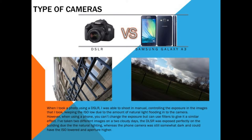The types of cameras I have used are DSLR and the Samsung Galaxy A3. When I took a photo using a DSLR, I was able to shoot in manual, controlling the exposure in the images that I took, keeping the ISO low due to the amount of natural light flooding into the camera. However, when using a phone, you can't change the exposure but can use filters to give it a similar effect.